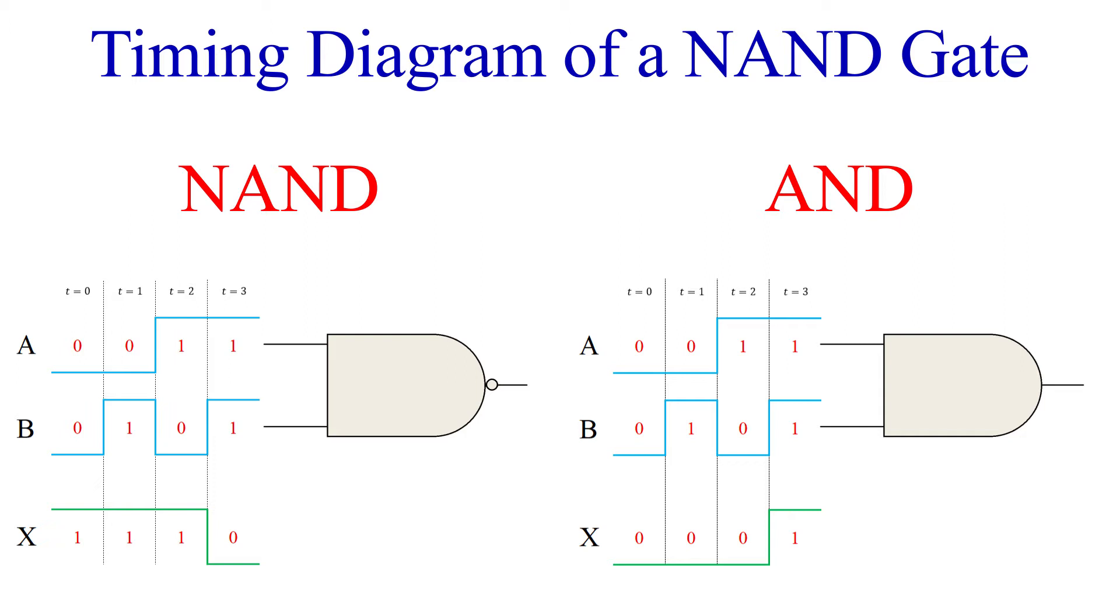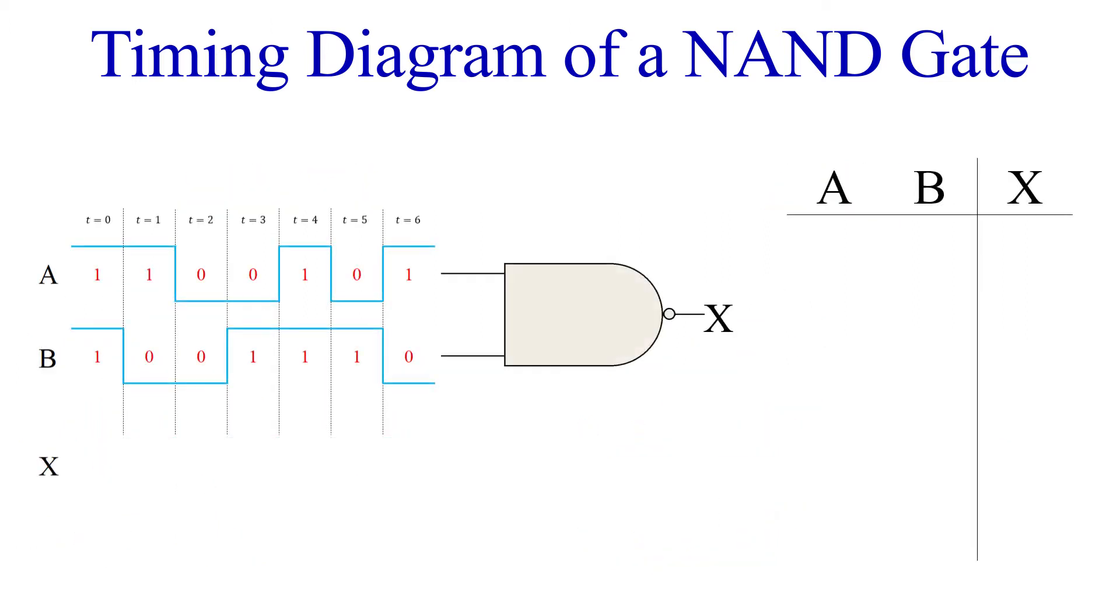You should have some practice with this after learning about the AND and OR gates. So let's bring up a new timing diagram and go ahead and determine the truth table for this set of inputs. First fill out all the table's inputs. Now determine the outputs, and now that we have the truth table, make the resulting output waveform.